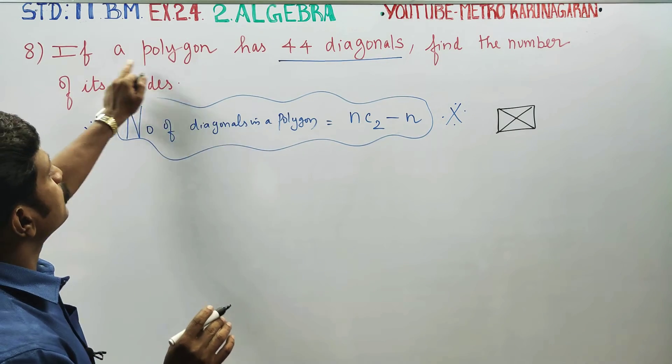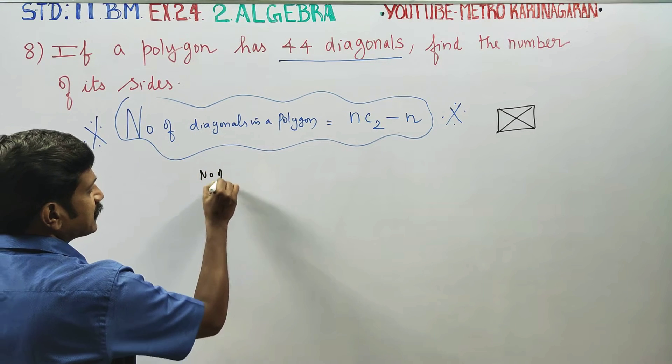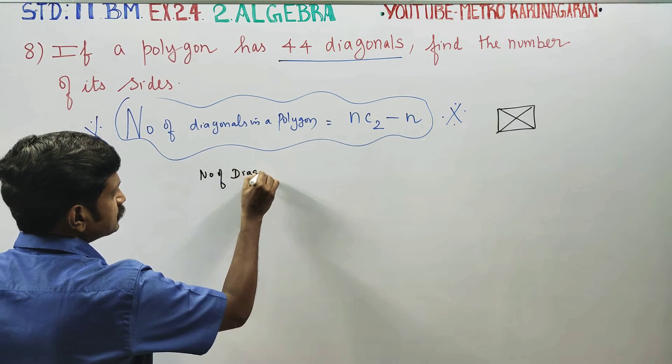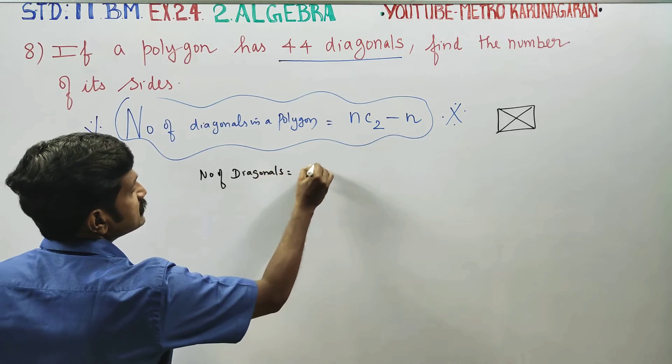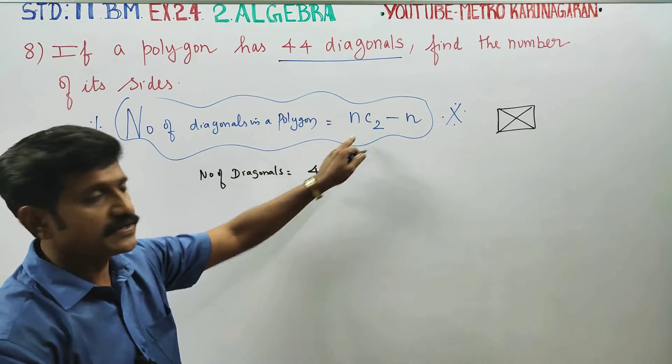Number of diagonals is 44. Number of diagonals is equal to 44.